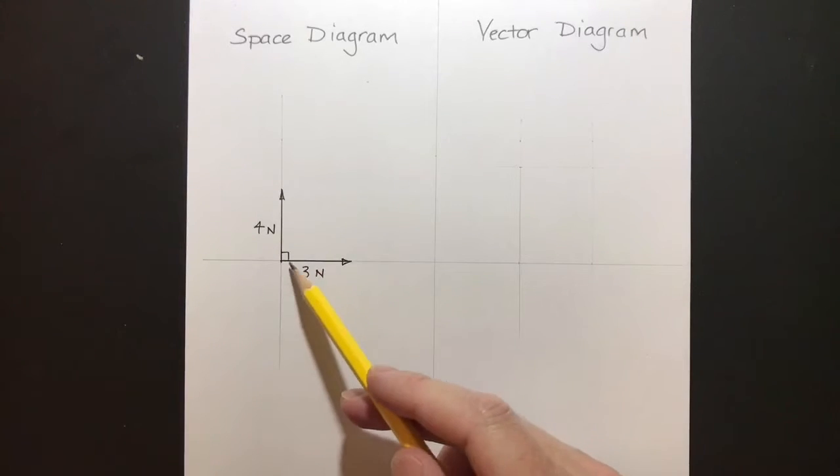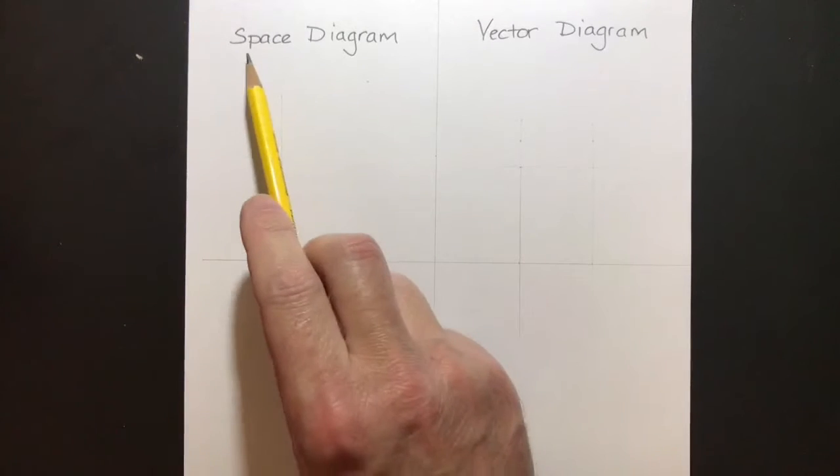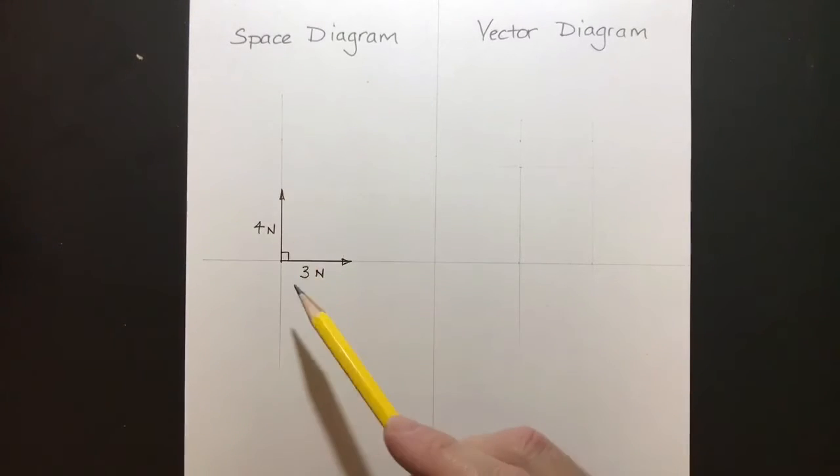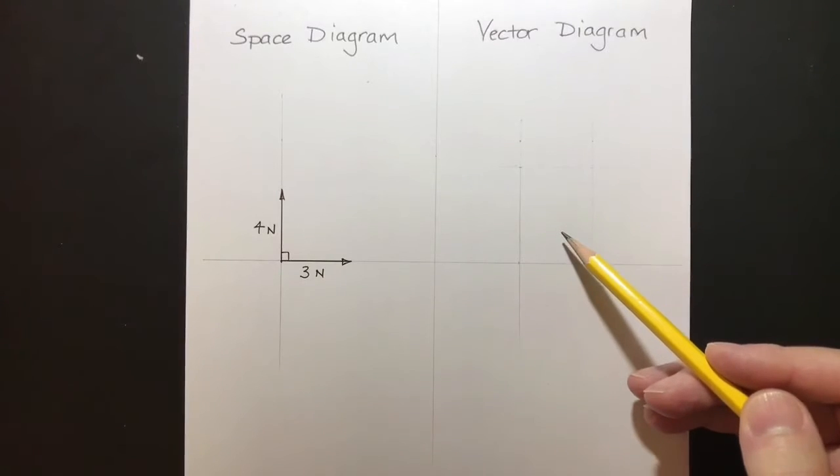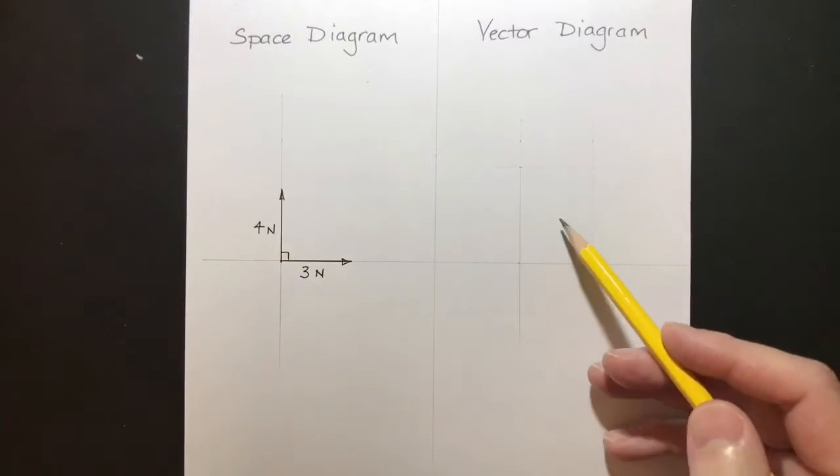On this diagram, they're both the same length. That's because this is just a sketch. It's a space diagram. It's not drawn to scale. What we're going to do over here is draw that system of forces to scale.